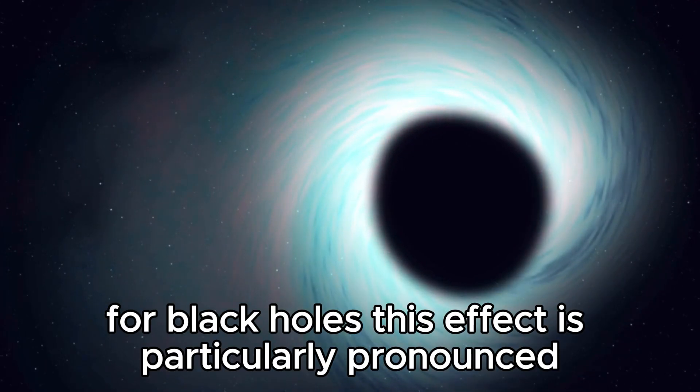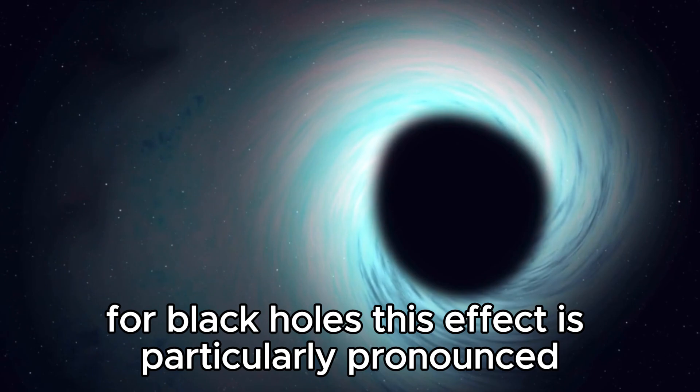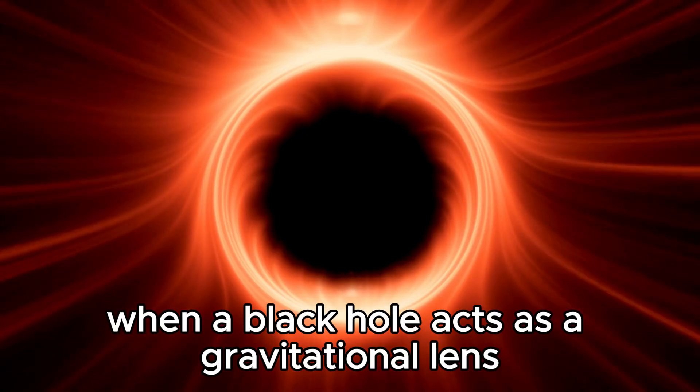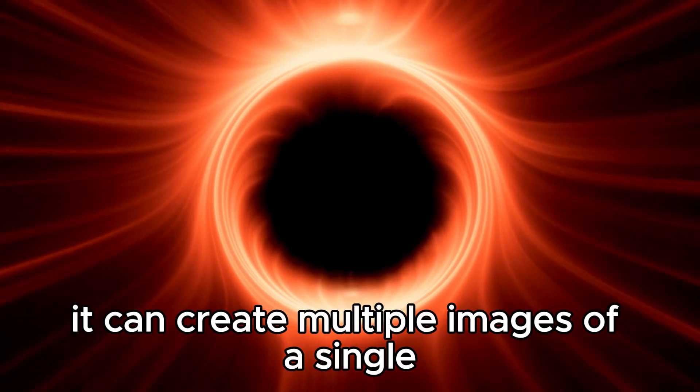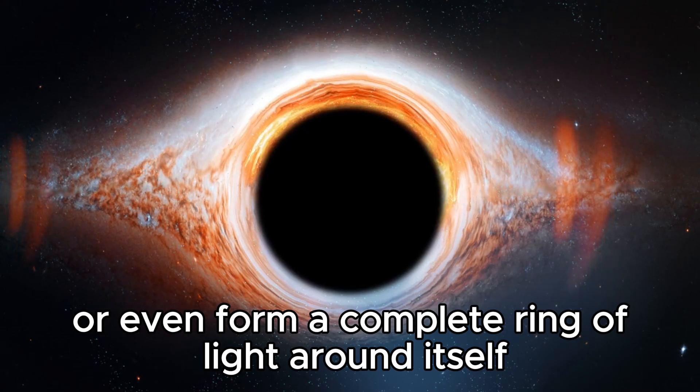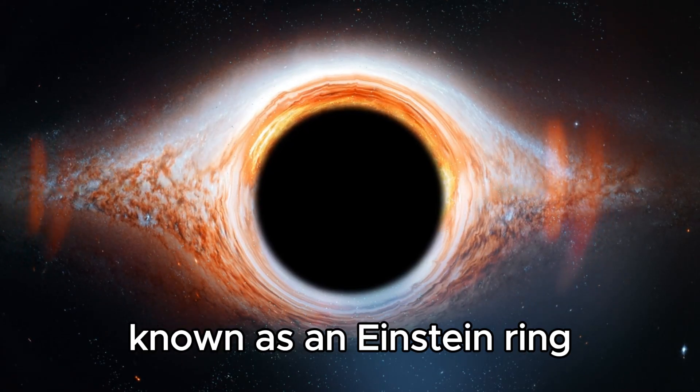For black holes, this effect is particularly pronounced due to their massive gravitational pull. When a black hole acts as a gravitational lens, it can create multiple images of a single distant object or even form a complete ring of light around itself, known as an Einstein ring.